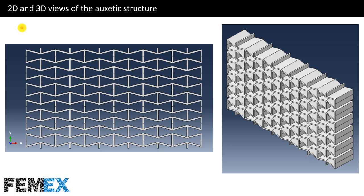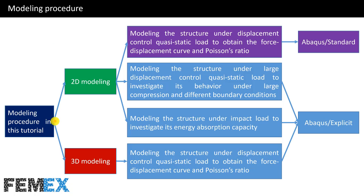Here you can see the 2D and 3D views of the auxetic structure. Now I want to talk about the modeling procedure in this tutorial. We have done two types of modeling: 2D modeling and 3D modeling.